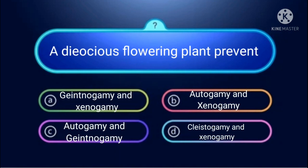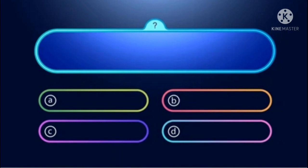Cleistogamy and xenogamy: cleistogamy prevents cross-pollination but xenogamy is possible. For autogamy and xenogamy: autogamy is impossible in dioecious plants, but xenogamy is possible — so option 2 has one right and one possible. The correct answer is autogamy and geitonogamy are both prevented in dioecious plants. Thank you so much, next lecture with next topic.